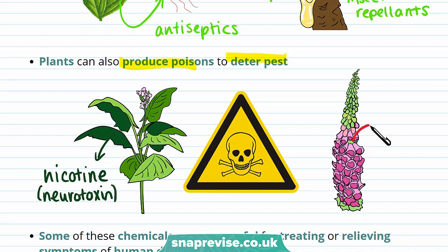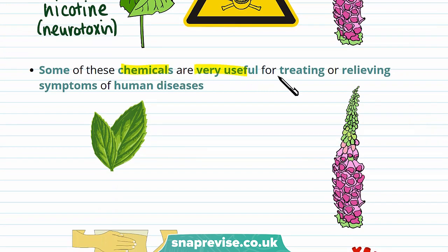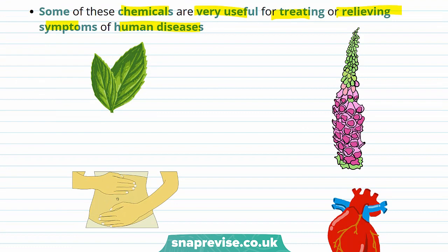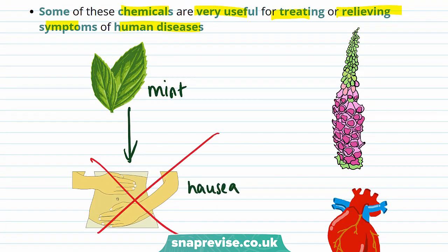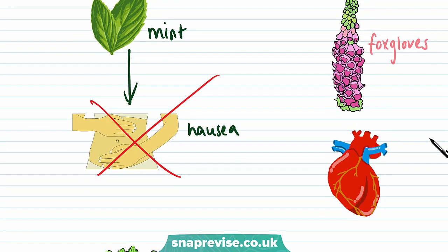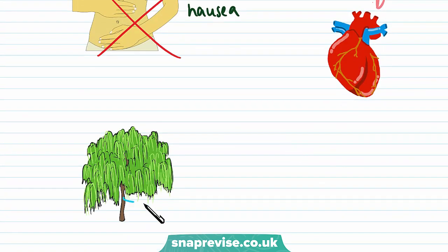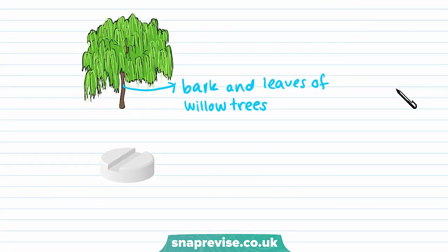Plants like foxglove produce digoxin, which is a toxic compound. Luckily, these chemicals can be really useful for treating or relieving symptoms of human diseases. For example, mint can stop nausea, and digoxin from foxgloves can be used to treat heart conditions. The bark and leaves of willow trees are used to make aspirin, which treats fever and illness and also acts as a pain reliever.